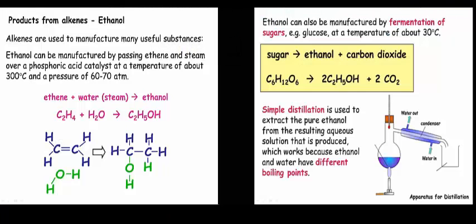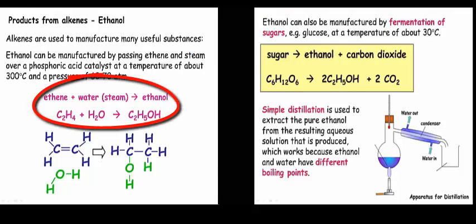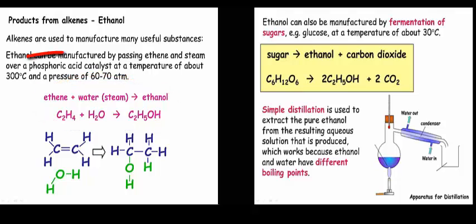There are two main methods for producing ethanol. One of them involves passing ethene and steam over a phosphoric acid catalyst at a temperature of about 300 degrees and a pressure of 60 to 70 atmospheres. These conditions are important and you will be expected to remember them.